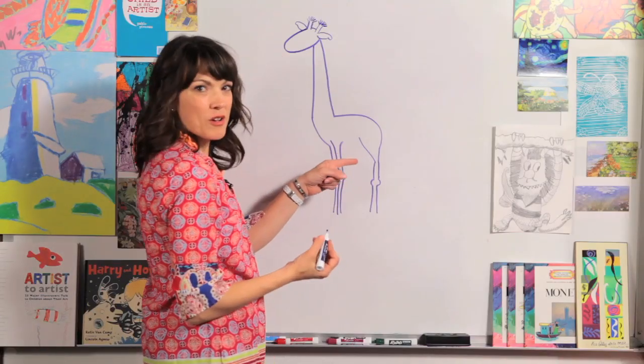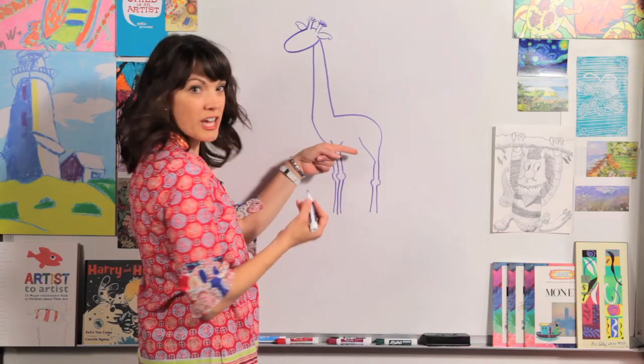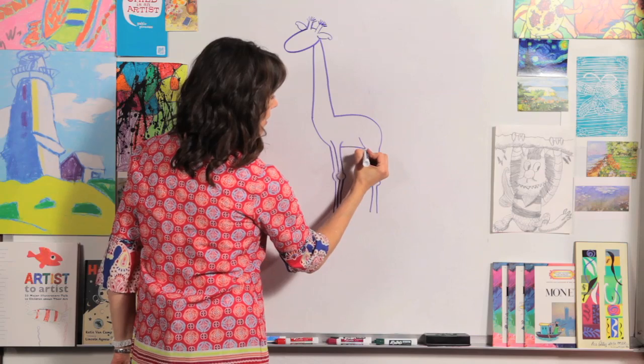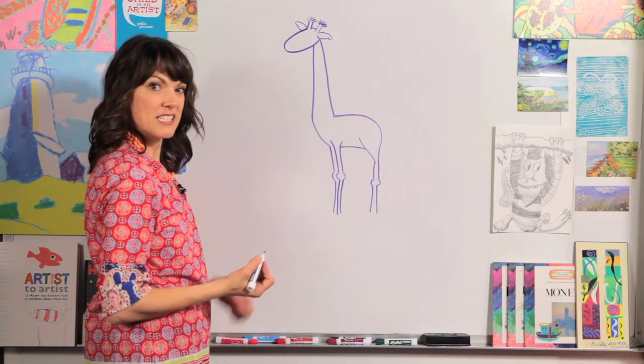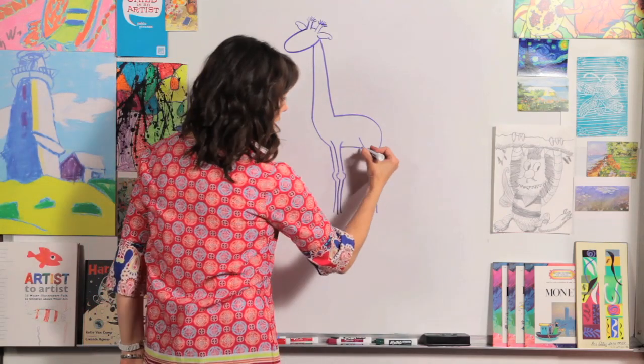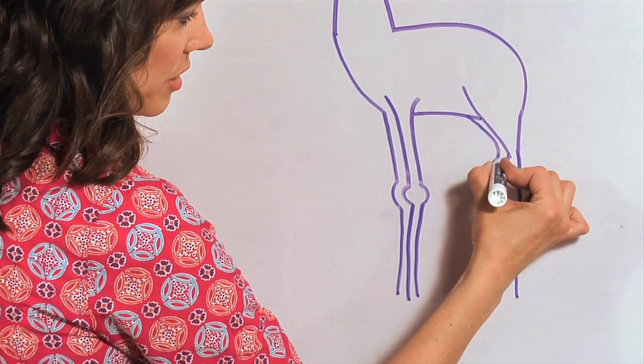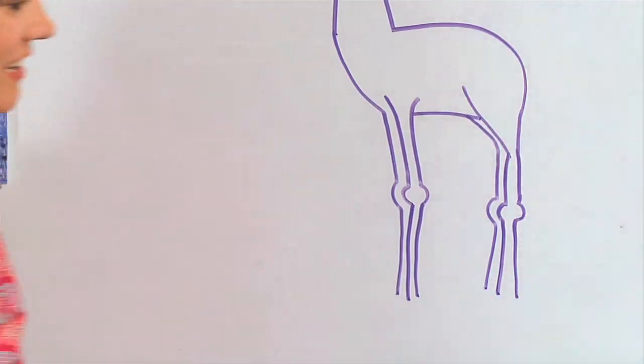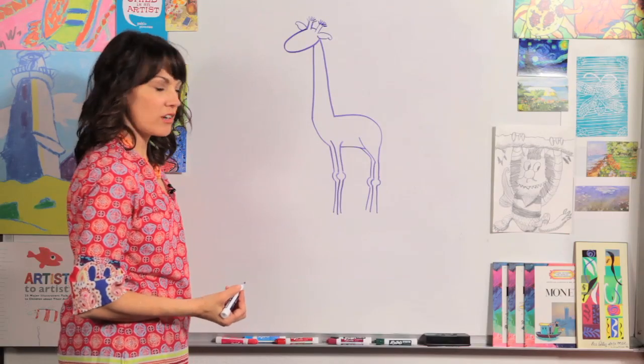And then this back leg, we've got to do something first. We've got to draw the tummy. Let's just draw a line right there to connect our legs, because this leg is on the other side of the tummy. And then we'll just come from the back, and we'll just follow this one. Go down, around, and down. There we have four legs.